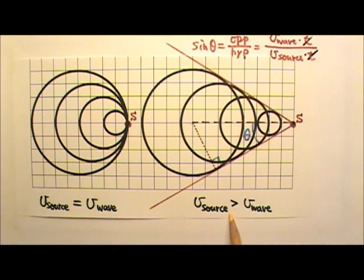If the wave source is moving at a speed that is faster than the speed of the wave, then we will get wave forms that look like this.